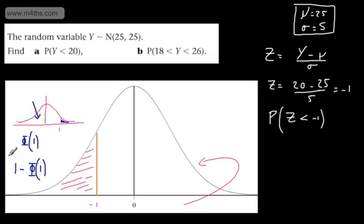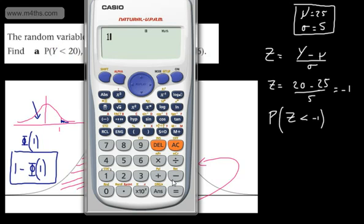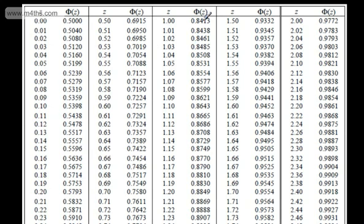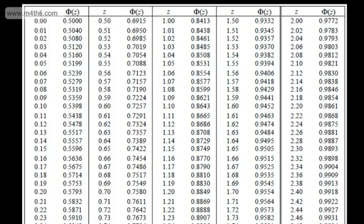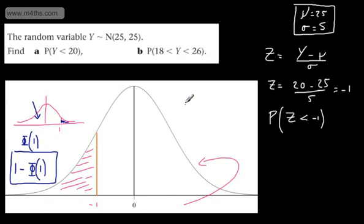Looking up phi of 1 in the table gives 0.8413. Subtracting from 1: 1 minus 0.8413 equals 0.1587. So the probability of Y being less than 20 is 0.1587.